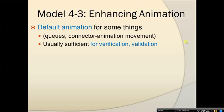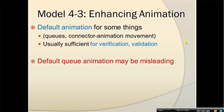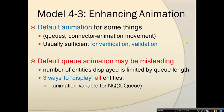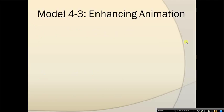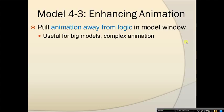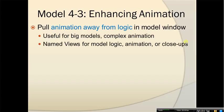However, default queue animation can be misleading. For example, the number of entities displayed is limited by queue length, and if you wanted to display all entities, there are three ways to do that. We could introduce an animation variable for the number in queue, or we can increase the size of the entity picture. We can also pull animation away from logic in the model window, which is especially useful for large and complex models. In this case, it's often useful to have named views, different for model logic or animation and different close-up views. I will show you how to create those named views.